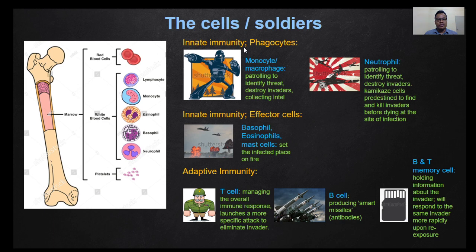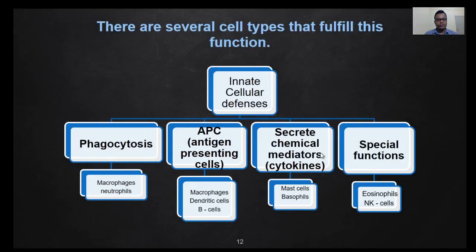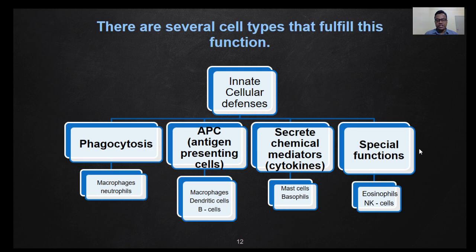The cells in innate immunity mainly consist of phagocytes, effector cells, and natural killer cells. There are several cell types that fulfill this function in innate cellular defenses: phagocytosis, which mainly consists of macrophages and neutrophils; antigen presenting cells — macrophages, dendritic cells, and B cells; cells that secrete chemical mediators such as cytokines — mast cells and basophils; and cells that possess special functions such as eosinophils and natural killer cells.